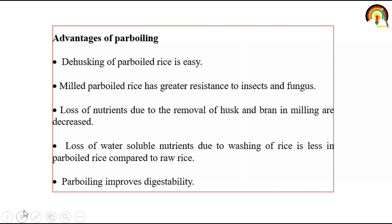What are the advantages of parboiling? Dehusking of parboiled rice is easy. Milled parboiled rice has greater resistance to insects and fungi — meaning insecticidal and fungicidal properties develop. Loss of nutrients due to removal of husk and bran in milling is decreased by this process. Loss of water-soluble nutrients due to washing of rice is less in parboiled rice compared to raw rice. Parboiling also improves digestibility. So these are the advantages of this process.